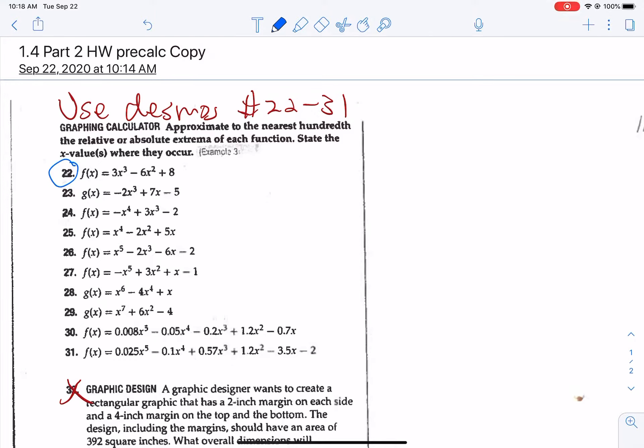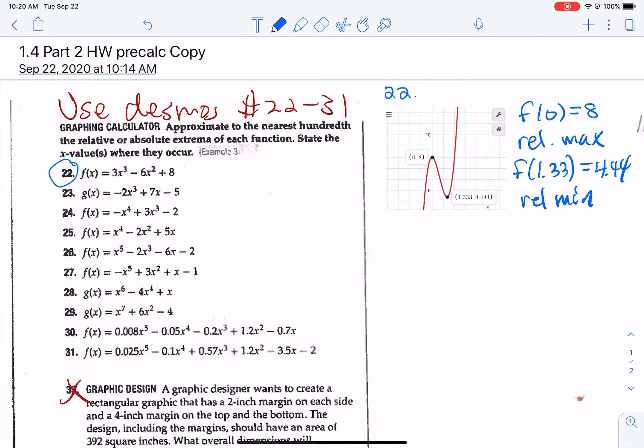And put that this is number 22. Now you need to tell me what these things are. So you can say f of 0 is 8, and that is this point right here. And that is a relative maximum. And then this point is f of 1.3 is 4.5 to the nearest hundredth. And that is a relative min.